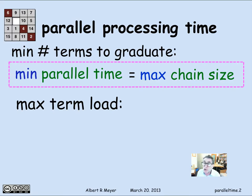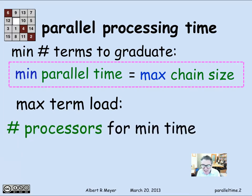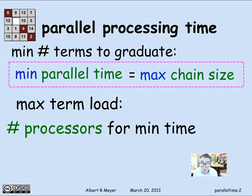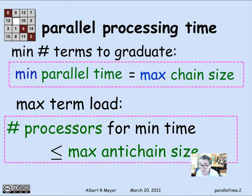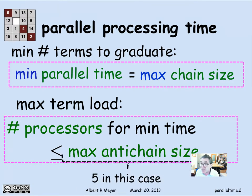What about the maximum term load? That corresponds to the number of processors you need to be doing tasks in parallel. For the course scheduling example, it means how many subjects you can take in one term. If you were doing computations, it would be how many separate CPUs you'd need to fully utilize the parallelism. A bound on the number of processors needed for minimum time is simply the maximum anti-chain size. In the previous course scheduling example, there were five courses you could take in one term — the second term — and that was the maximum anti-chain size.